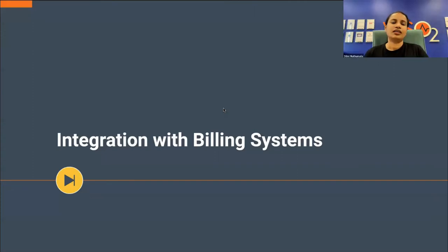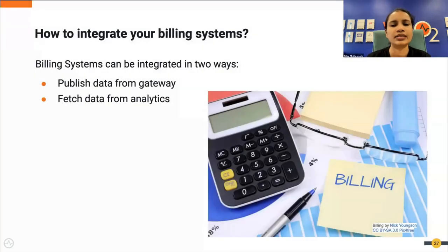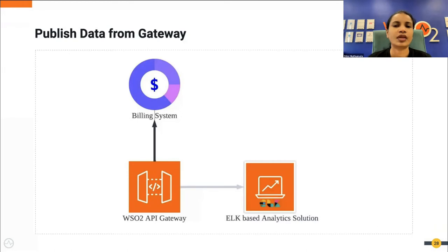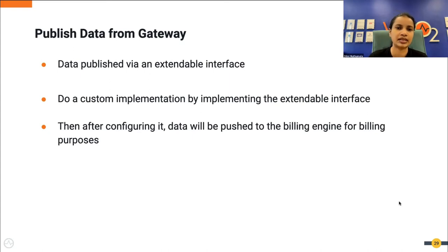Now let's move on to how to integrate your billing system with the analytics. A billing system allows you to monetize your API - it's an important part of any API management system. You have two options to integrate your billing system: you can either plug it into the gateway or plug it into the analytics. In option one, you plug the billing system into the gateway. The usage data is published from the gateway to a third-party billing engine via an extendable interface. The user needs to do a custom implementation of this extendable interface to push data to the intended billing engine, after which real-time data will be pushed to the billing engine.